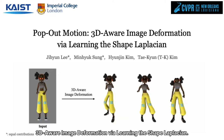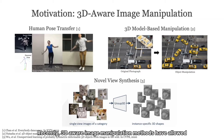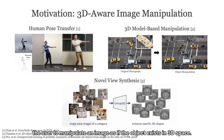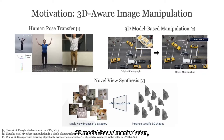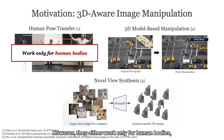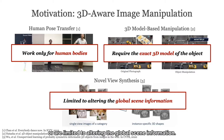Recently, 3D-aware image manipulation methods have allowed the user to manipulate an image as if the object exists in 3D space. These include methods on human pose transfer, 3D model-based manipulation, and novel view synthesis. However, they either work only for human bodies, require the exact 3D model of the object, or are limited to altering the global scene information.